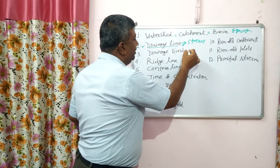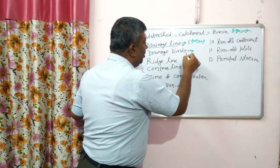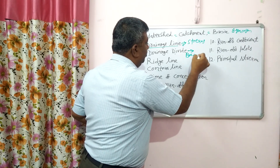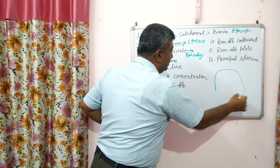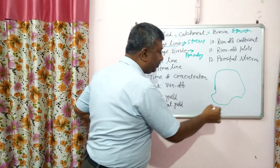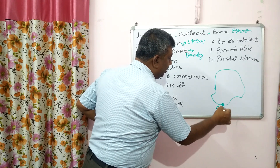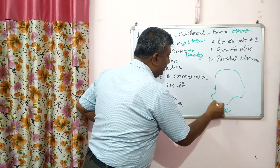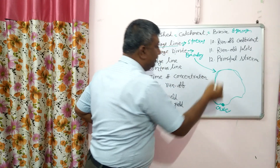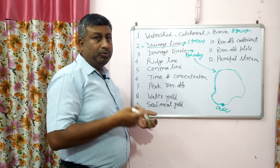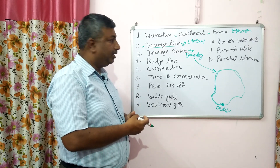Then, drainage divide. Drainage divide is the boundary of the watershed. Suppose this is a watershed and this is the outlet — the boundary of that watershed area is called the drainage divide.